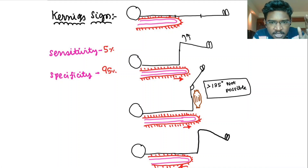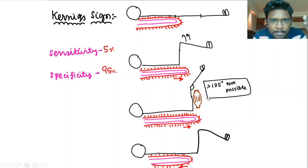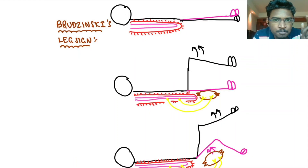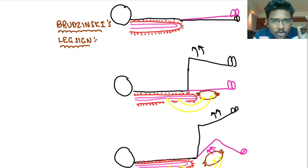By not allowing extension, it is protecting the meninges by not causing stretching of the meninges. Next is Brudzinski's Leg sign. Here, the same method I am going to do — flexing the hip and trying to extend the knee, but observe the other lower limb.